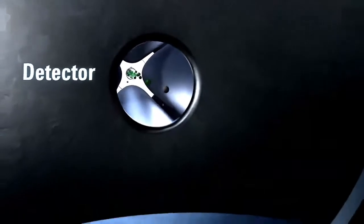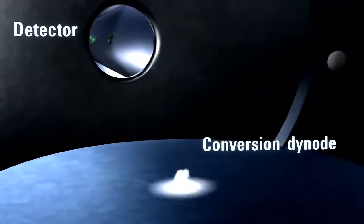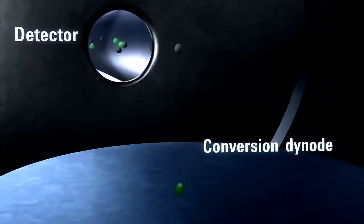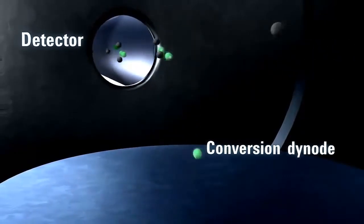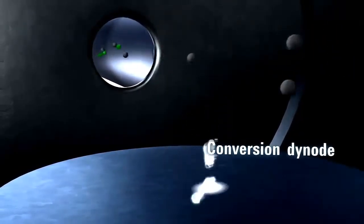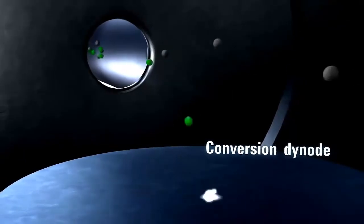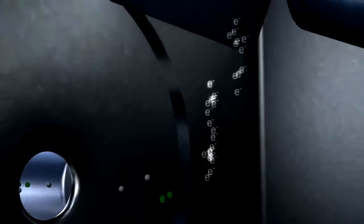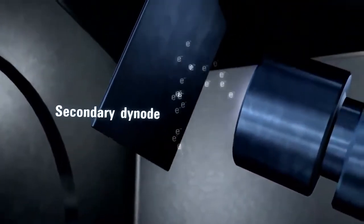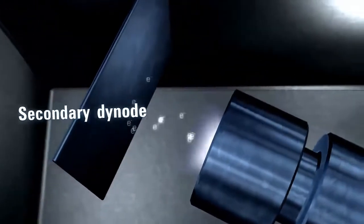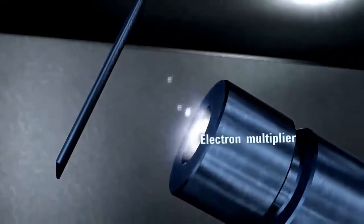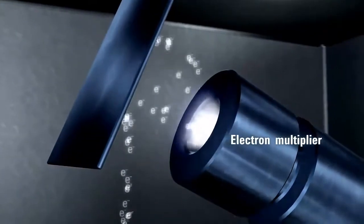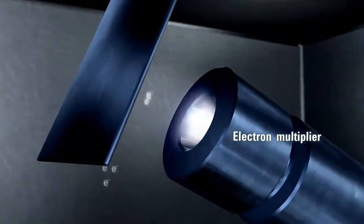In the detector, the conversion dinode operates at 10,000 volts to improve sensitivity. Because the conversion dinode is off the main axis of the ion path, neutral molecules miss the dinode, thus eliminating neutral noise. A secondary dinode helps extend the useful life of the electron multiplier. The electron multiplier has a long life, but it is also easily replaced.